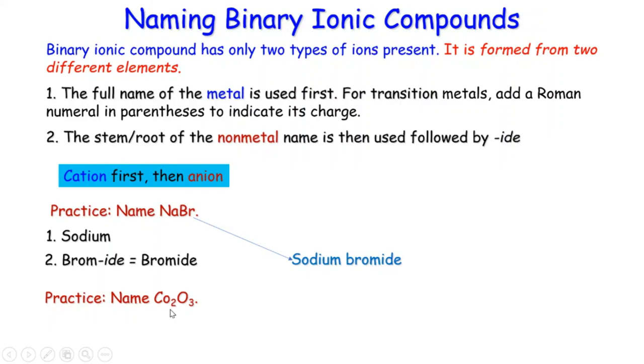Co2O3. Write down the full name of the metal. Since this is a transition metal, we have to indicate the charge. How do we know it carries positive 3? Because we know oxide is negative 2. Negative 2 times 3, total negative 6. Then we need a positive 6. 6 divided by 2. Then each cobalt ion has to be 3+. And then followed by the ion's name, oxygen, then that's oxide. Therefore cobalt(III) oxide.